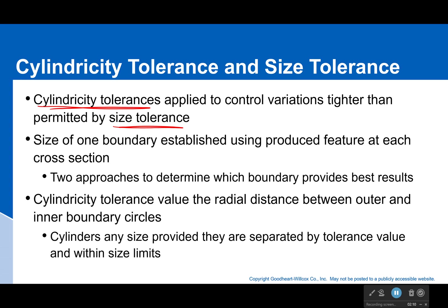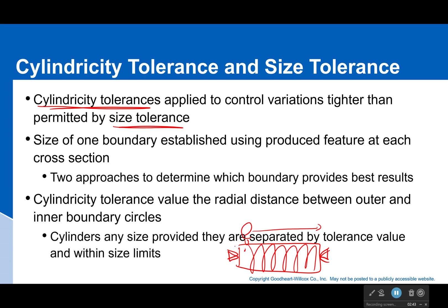Cylindricity tolerance values — we're looking at the radial distance between the outer and inner boundary circles, and we're going to do that for every single cross section and see what the max full indicator movement is. An easy way of doing this is just to take your cylinder, connect it at both ends, and then spin it while measuring with your indicator. You'll move down the surface while spinning and rotating the entire time, and you can measure the full indicator movement. If it's too high, you re-orient it slightly — maybe the axis was here and this one should be down here — and you keep spinning it until you finally minimize that full indicator movement.